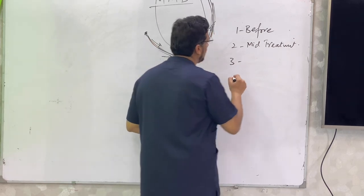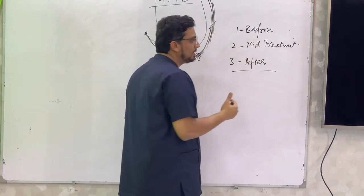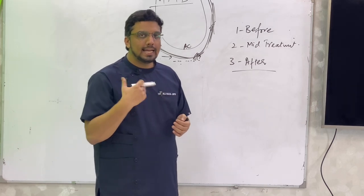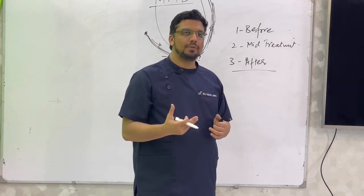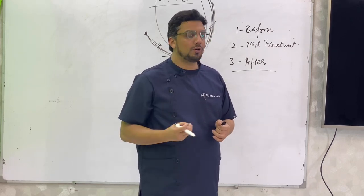Why after the orthodontic space closure? Because after the closure when they reflect the tissue, the healing granulation tissue after the frenectomy will help in stabilization and help in repositioning.